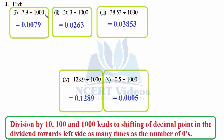Fourth: find 7.9 divided by 1000, 26.3 divided by 1000. Now you have to divide by 1000 — that means 3 shifts because we have three zeros: 1, 2, 3. Writing 79 as it is, initially we were here — so 1, 2, 3. Now 263 as it is, 3 shifts from this position — here we are: 1, 2, 3 — so the answer is 0.0263.